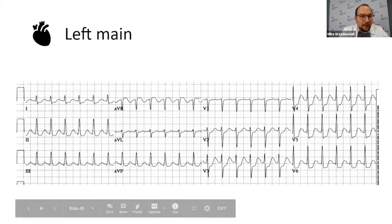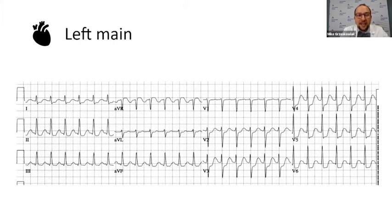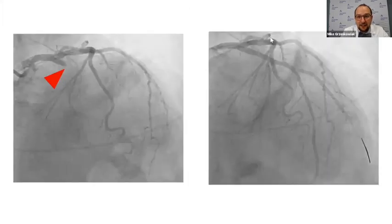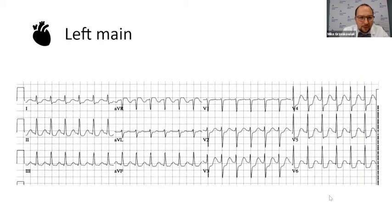They might be having very critical obstruction that really has to be intervened on. It's important because these patients could decompensate super fast. You can imagine if you're occluding the entire left system — the left anterior descending and the left circumflex — all this myocardium — these patients could crash on you really, really fast. So have this EKG burned in your mind.